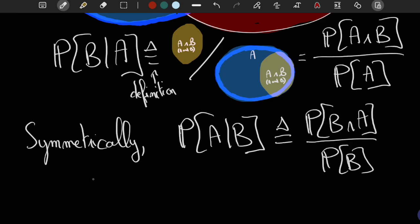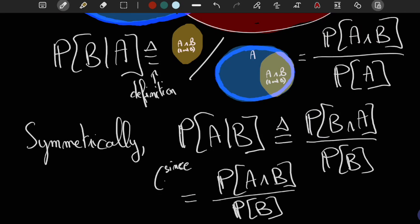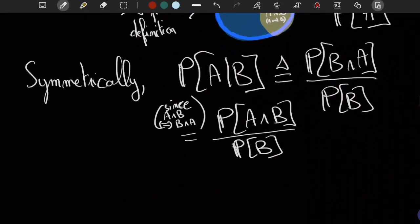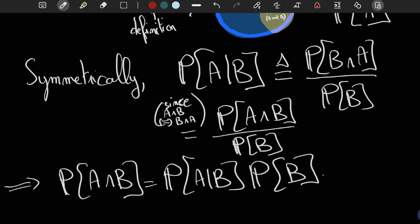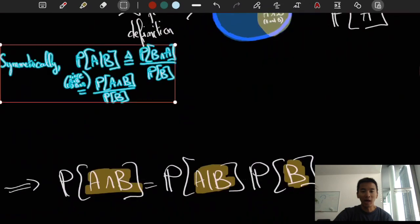Thus, we also have probability of A given B is equal to the probability of A and B divided by the probability of B. But now we see that this implies that the probability of A and B is equal to the probability of A given B times the probability of B. In other words, if you want to have A and B, then you first need to have B and then given B, you need to obtain A.